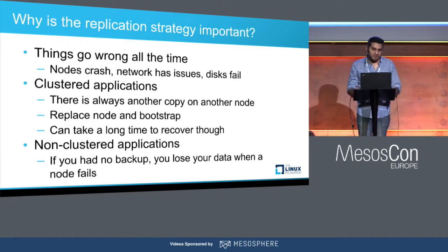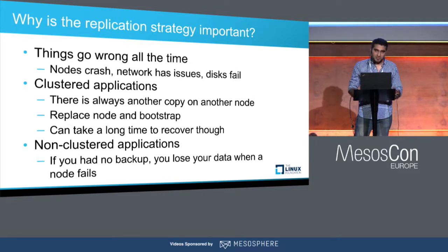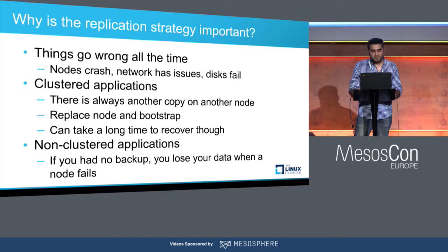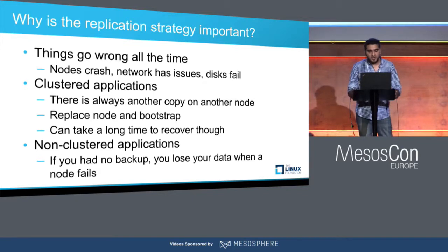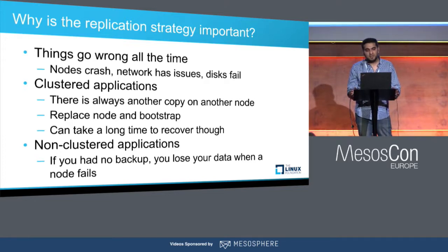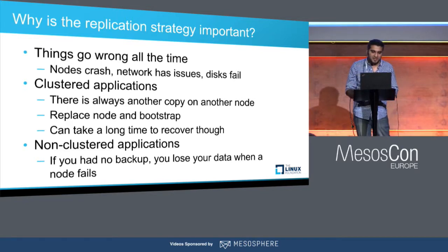Why is this replication strategy important? Bad things happen all the time — nodes could crash, networks could have issues or get partitioned so nodes are not in quorum, disks could go down, or an entire rack could go down bringing multiple nodes with it. For applications that do their own replication, there is always another copy on one of the other nodes, so you can still serve IOs and your application will not be affected by one node being down. If you have to replace a node, you can bootstrap it and repair the necessary data to it.